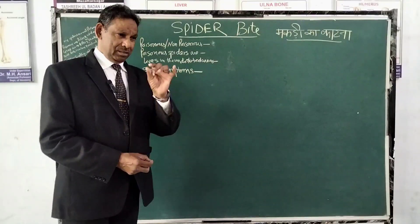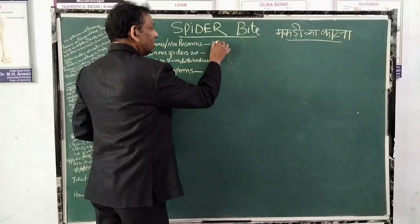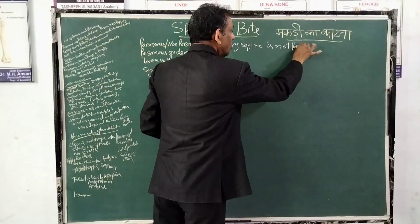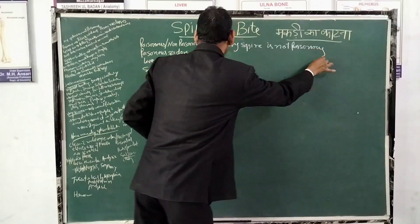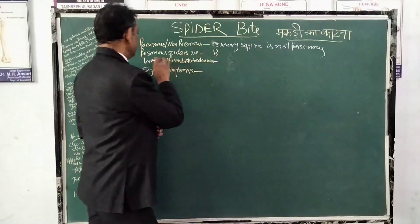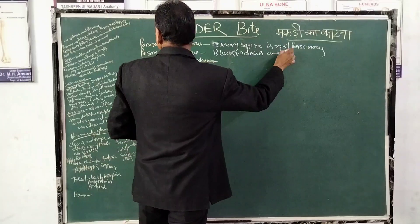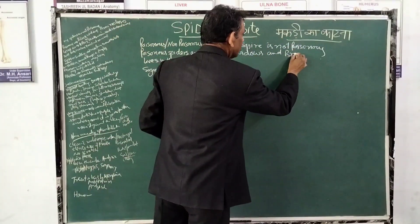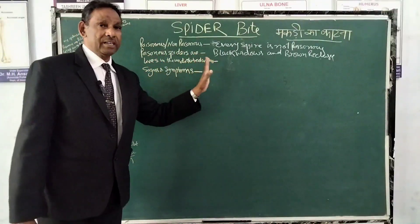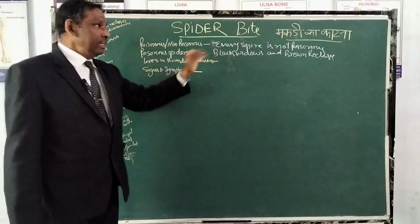Although every spider is not poisonous. The poisonous spiders are black widows and brown recluses — these are the names of the poisonous spiders.